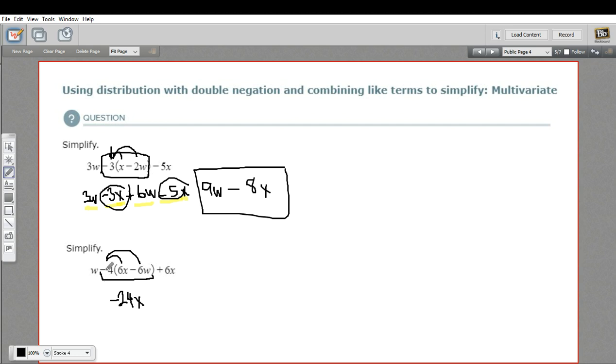So that's negative 24 times x. Next, we have negative 4 times a negative 6w. Let's just do the number part first. Negative 4 times negative 6, that's a positive 24. And then we just write the w there to multiply it to that.